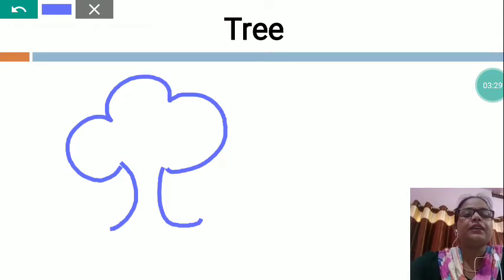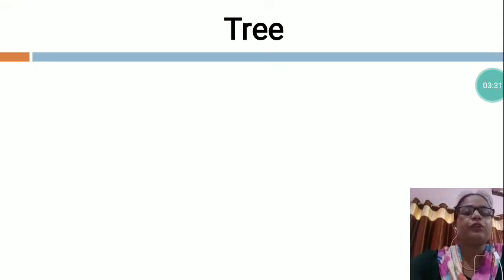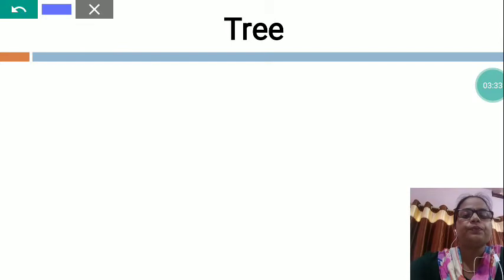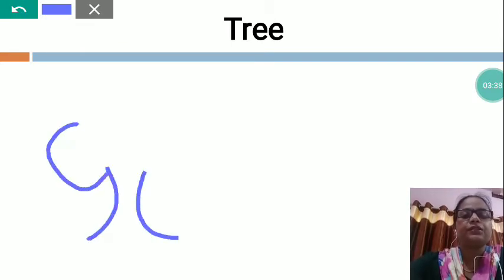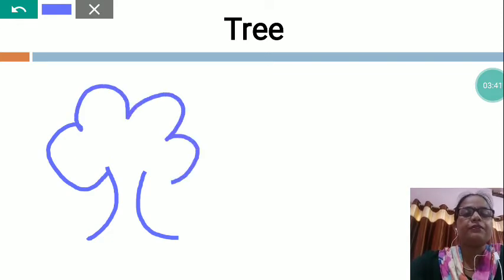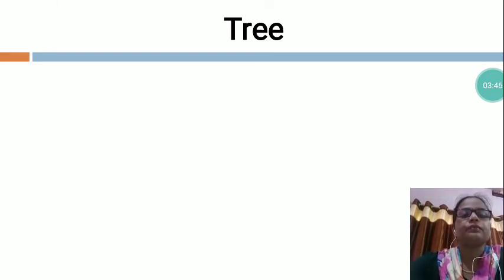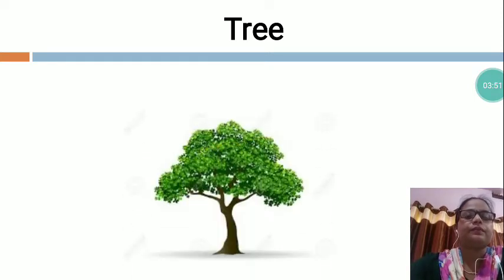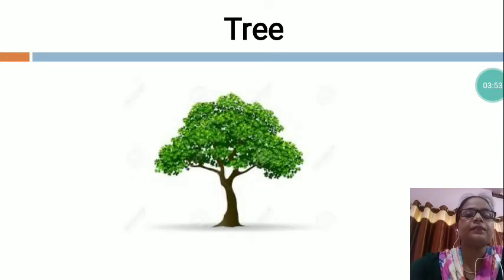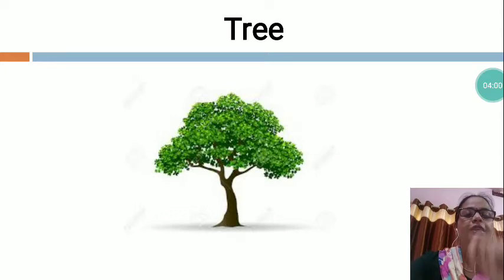And then you will fill the color. Again, I am going to show you how to draw - you can see. This is a tree. First, you will draw and after that you will fill the color. Now I am going to show you the tree picture. See, this is a God made thing - we can't make it, only God can make. This is a God made thing.